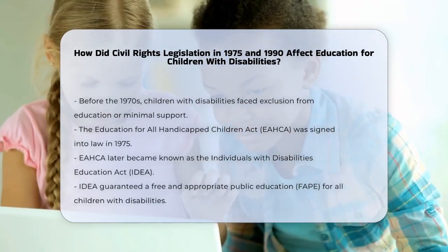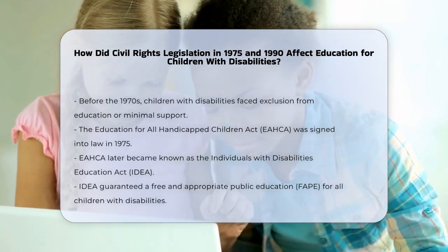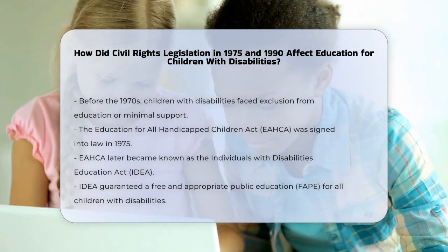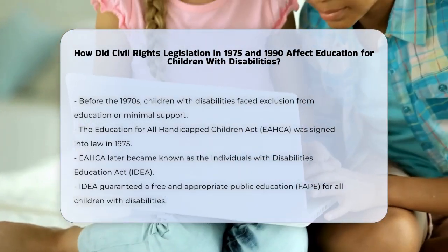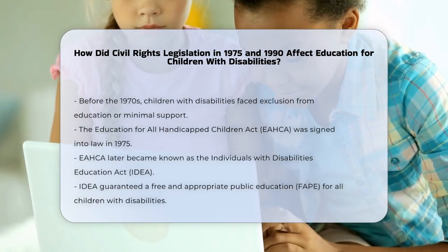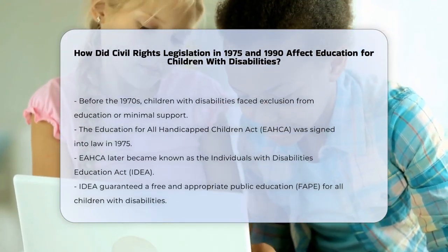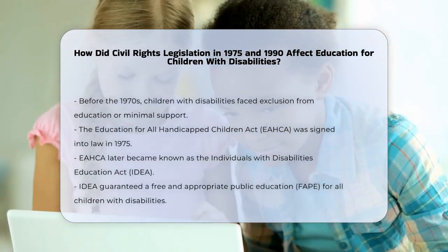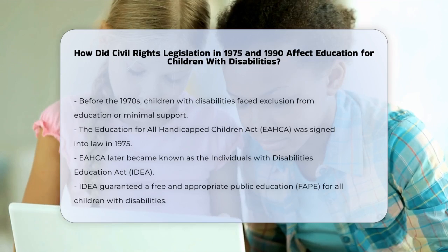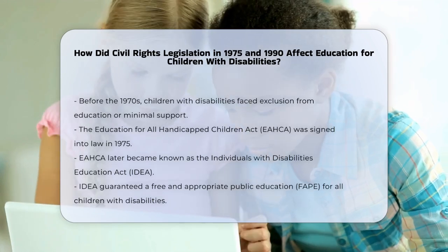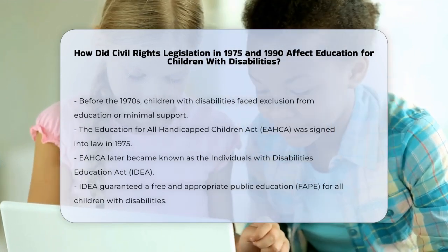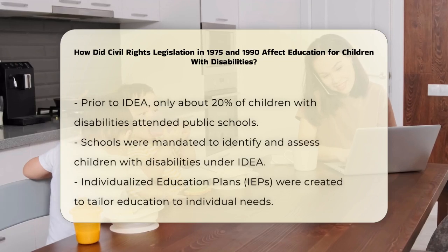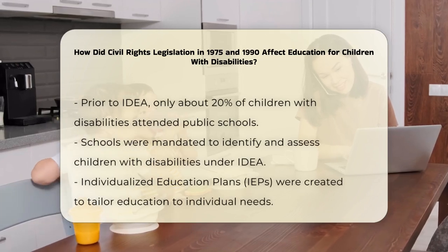In 1975, the Education for All Handicapped Children Act, or EAHCA, was signed into law. This law later became known as the Individuals with Disabilities Education Act, or IDEA. It was a game-changer because it guaranteed a free and appropriate public education, or FAPE, for every child with a disability in the United States.